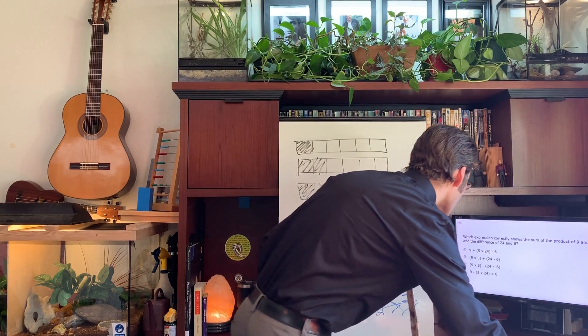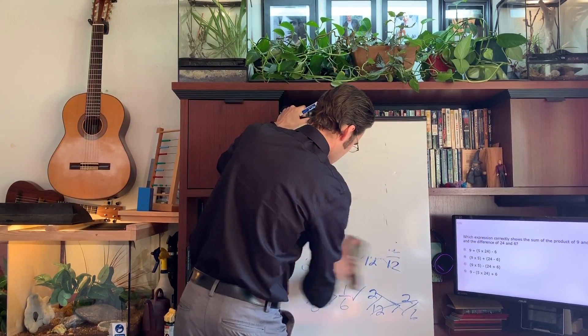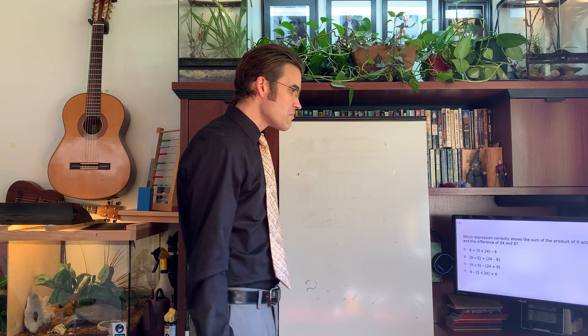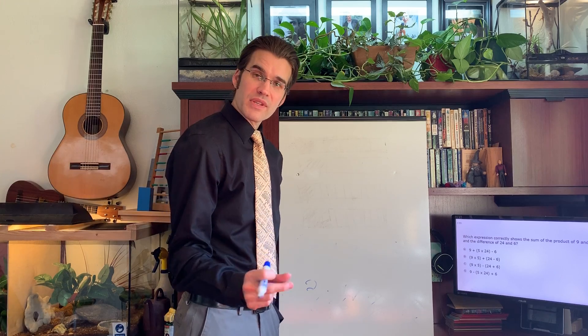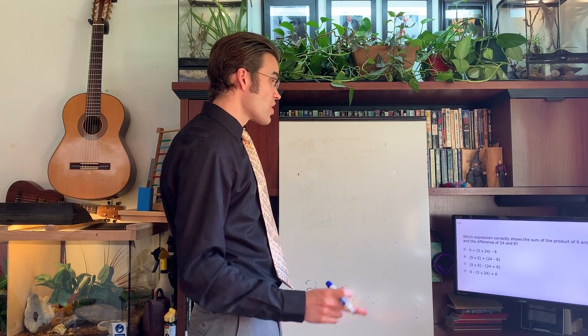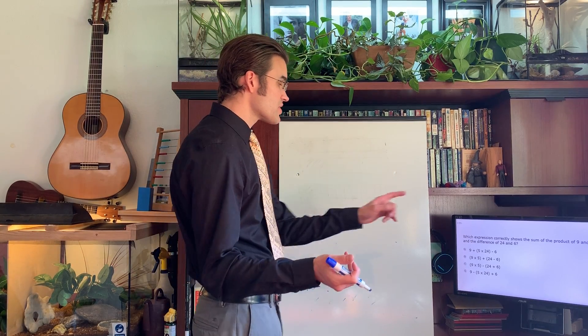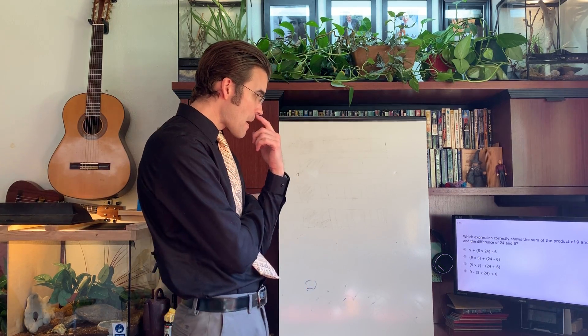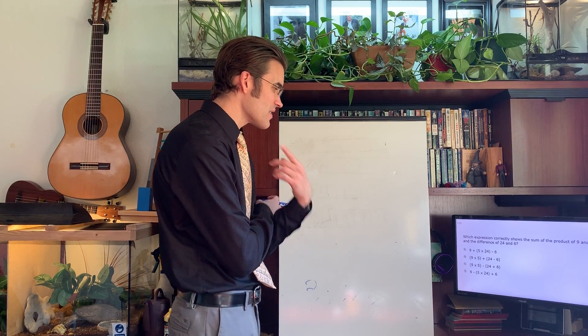Let's take a look at fifth grade. This says which expression correctly shows the sum of the product of nine and five and the difference of 24 and six. Now the reason I put this up is because I want you to practice reading math sentences. Which expression correctly shows the sum of a product? Sum is what? Addition, right. So the sum of the product of nine and five. The sum of the product. So the product of nine and five...